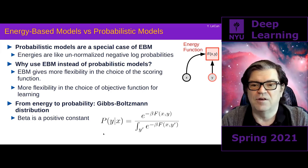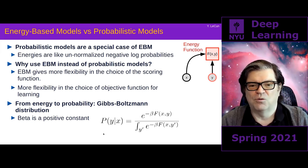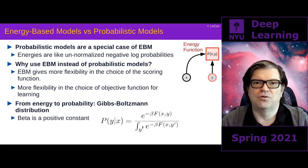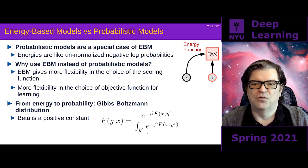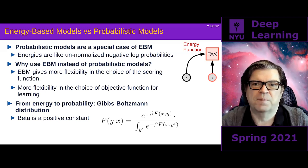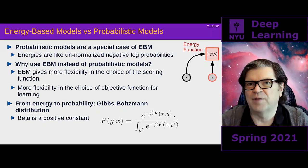If y is a discrete variable, this integral is turned into a discrete sum, and those numbers will all be between zero and one and will sum to one. That's what softmax does.